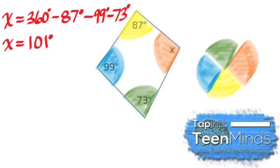Subtracting our three angles from 360, we find that x is equal to 101 degrees.